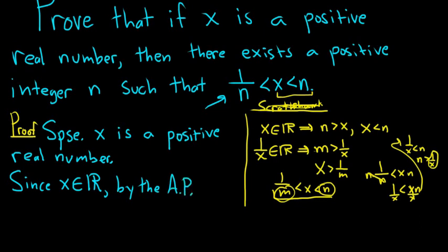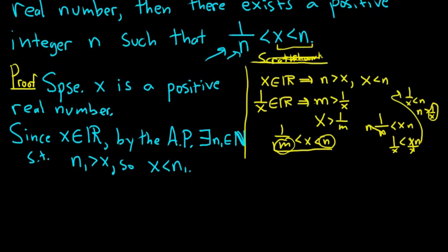by the Archimedean property, I'll say by the AP, there exists, and I don't want to use n or m. I'm going to use a different letter because I want n to be my final letter. So I'm going to use n1. n1 in the set of natural numbers, such that n1 is bigger than x. So this means that x is less than n1. And as we figured out in our scratch work, in order to come up with this, which is not the final answer, but it's close to it, we need to use 1 over x.